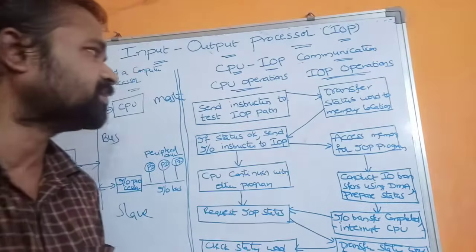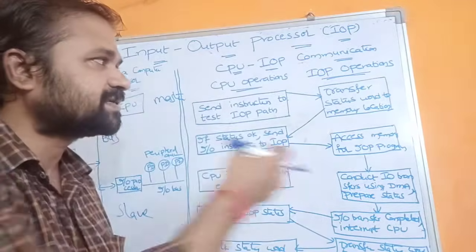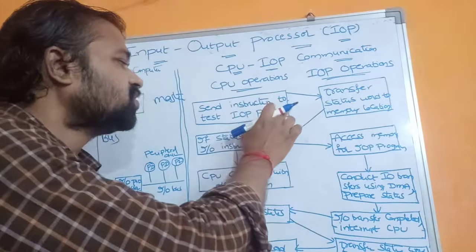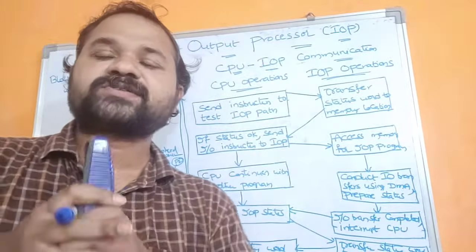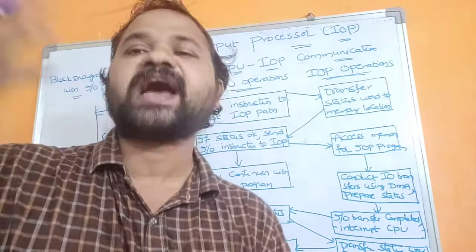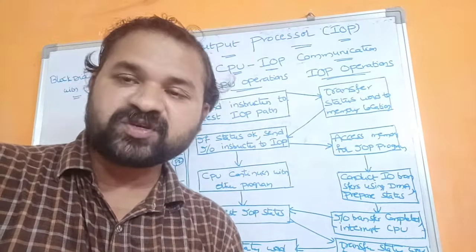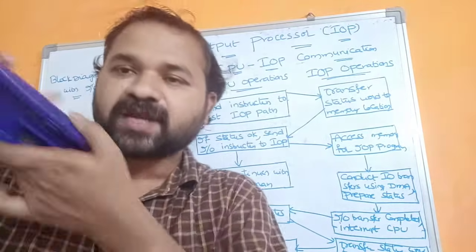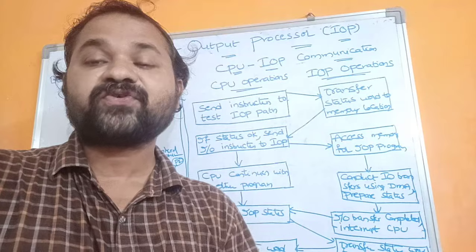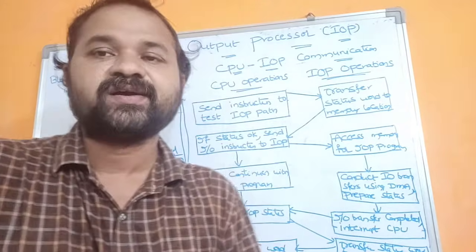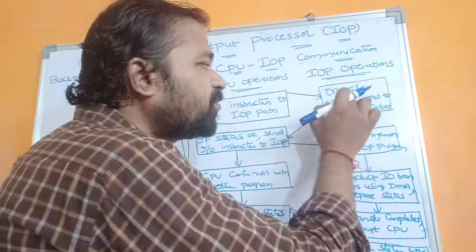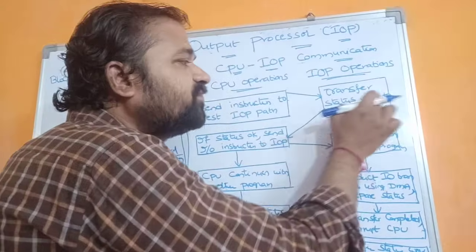Now let us see how communication is done between the CPU and the IOP. First, the CPU sends an instruction to test the IOP path — that is, to check the status of the I/O processor. The I/O processor may be either free, busy with some data transfer, or overburdened. So the CPU sends an instruction to the I/O processor to know its status.